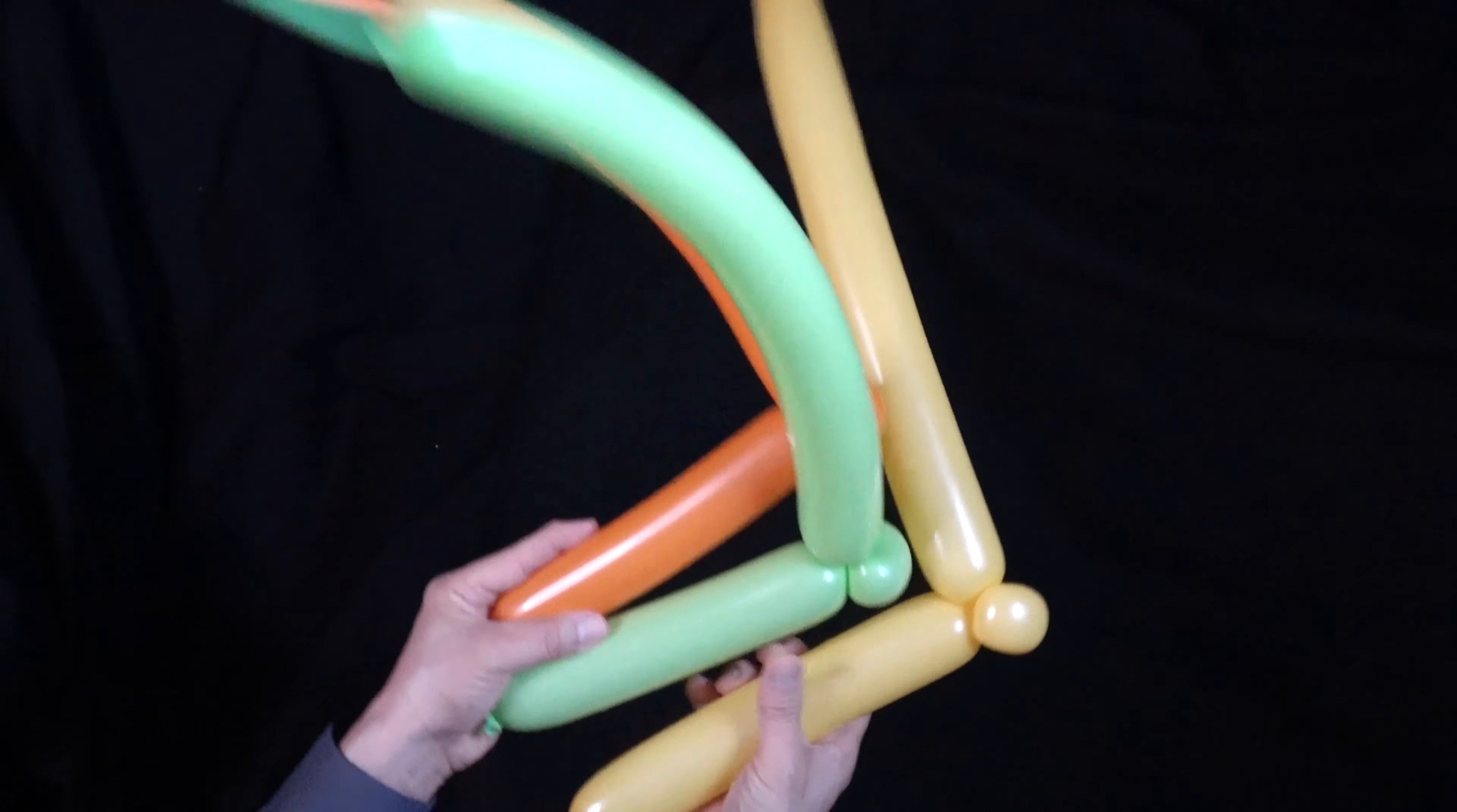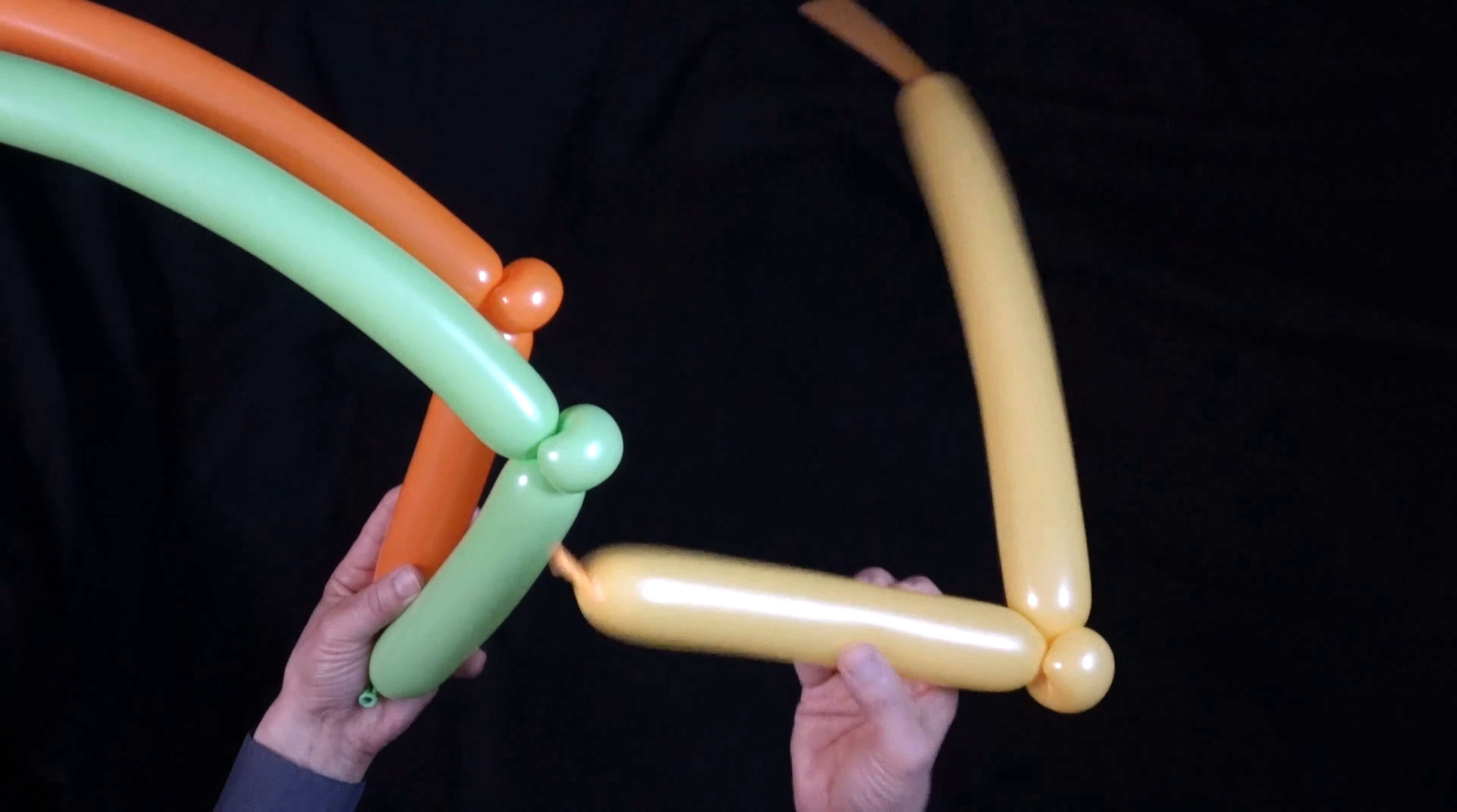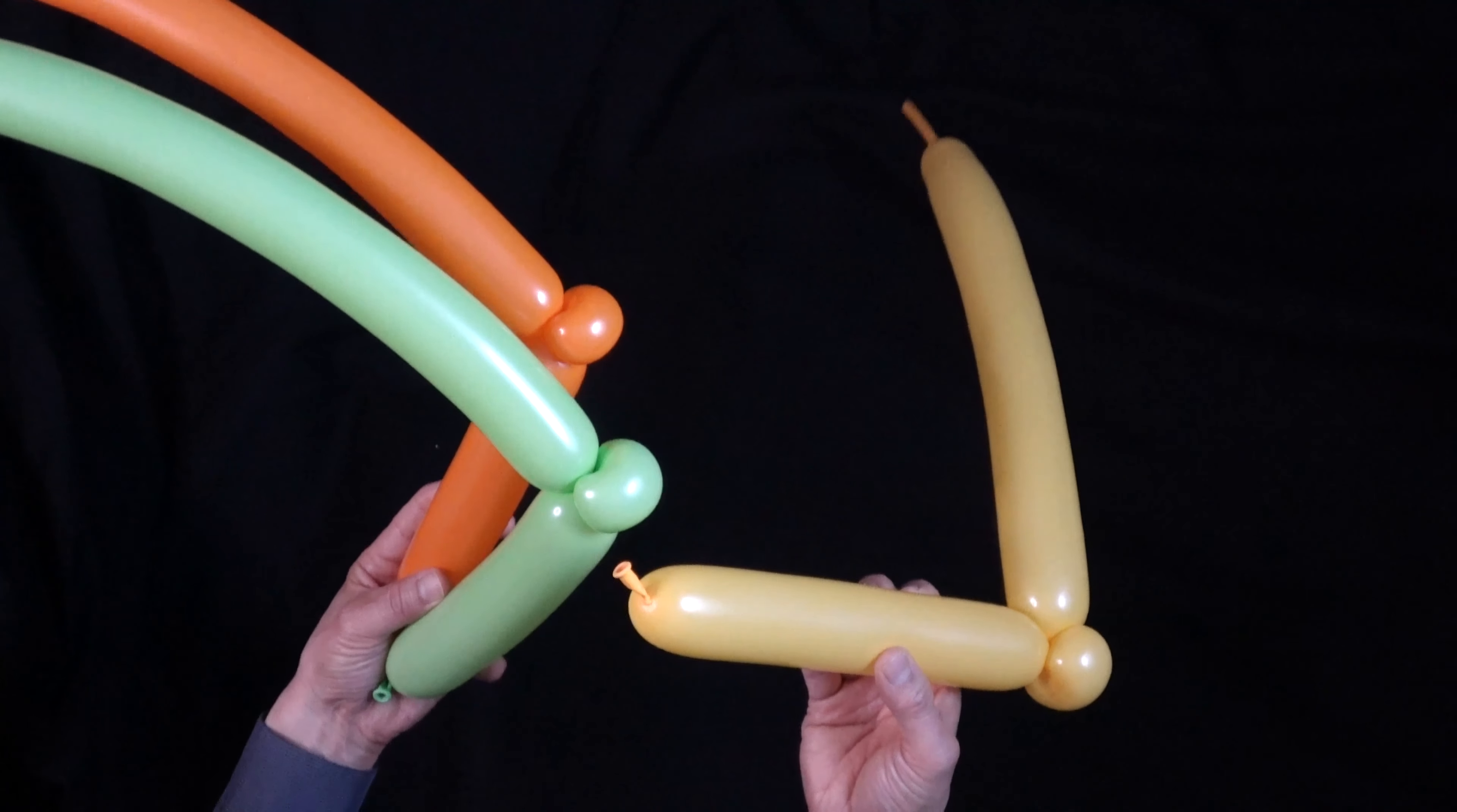Now we have three of these balloons. What you're going to do is take the nozzle of one balloon and put it into the twist here with the pinch. Pinch twist. We're going to do that with all three balloons so they're all attached to each other.